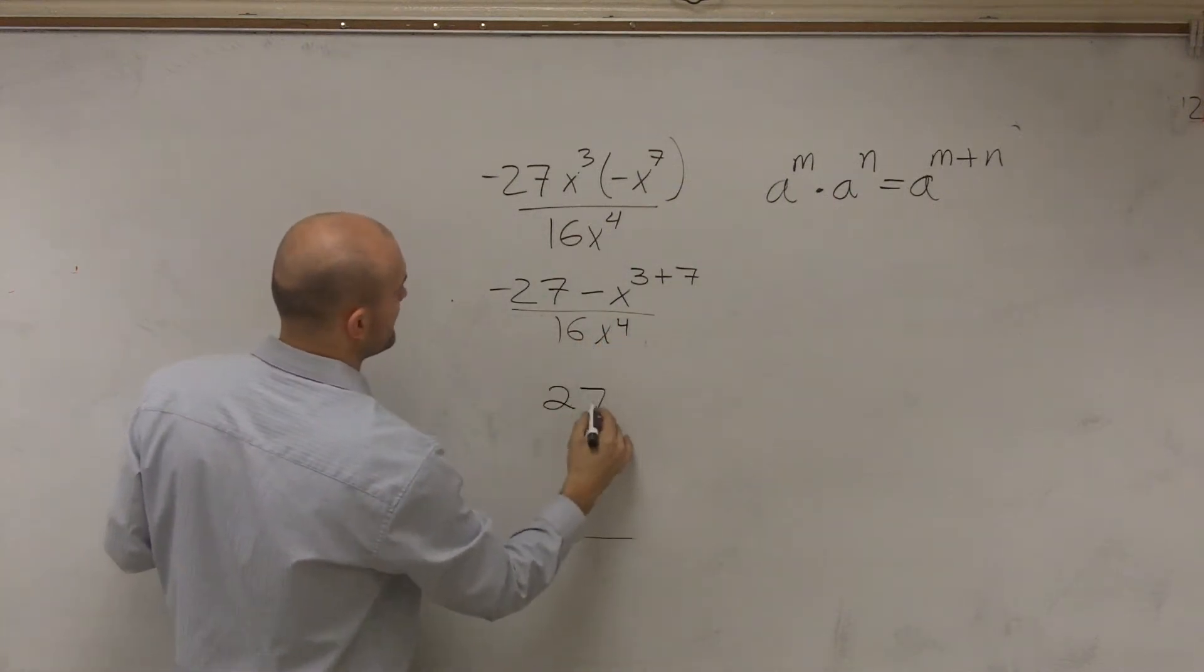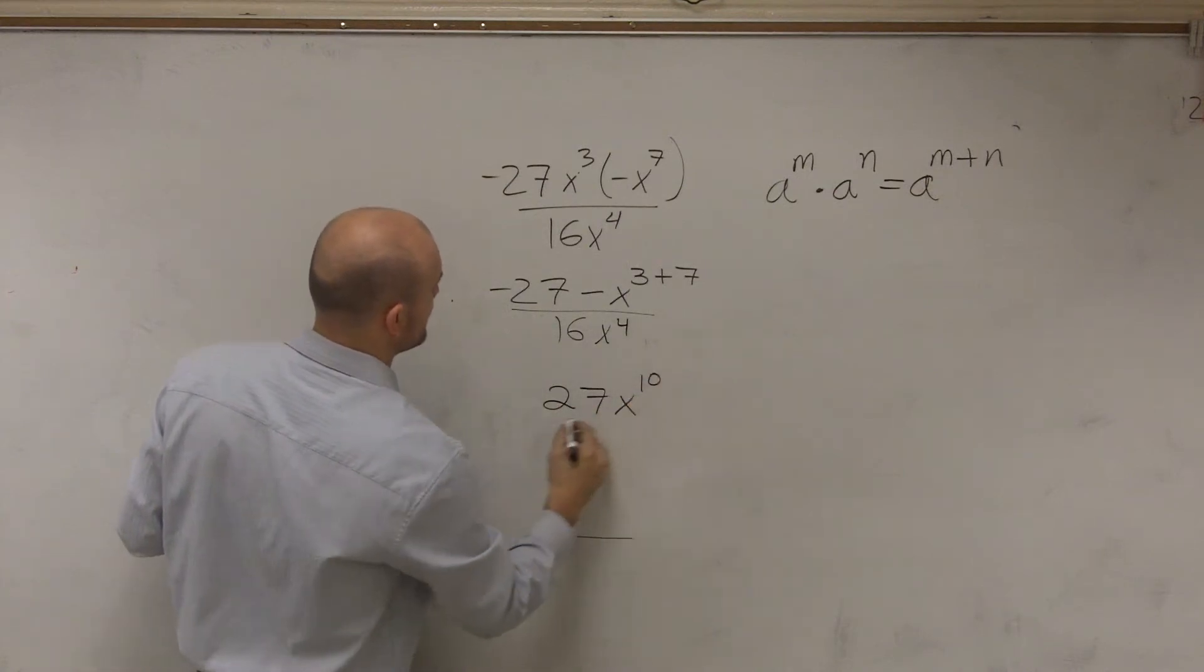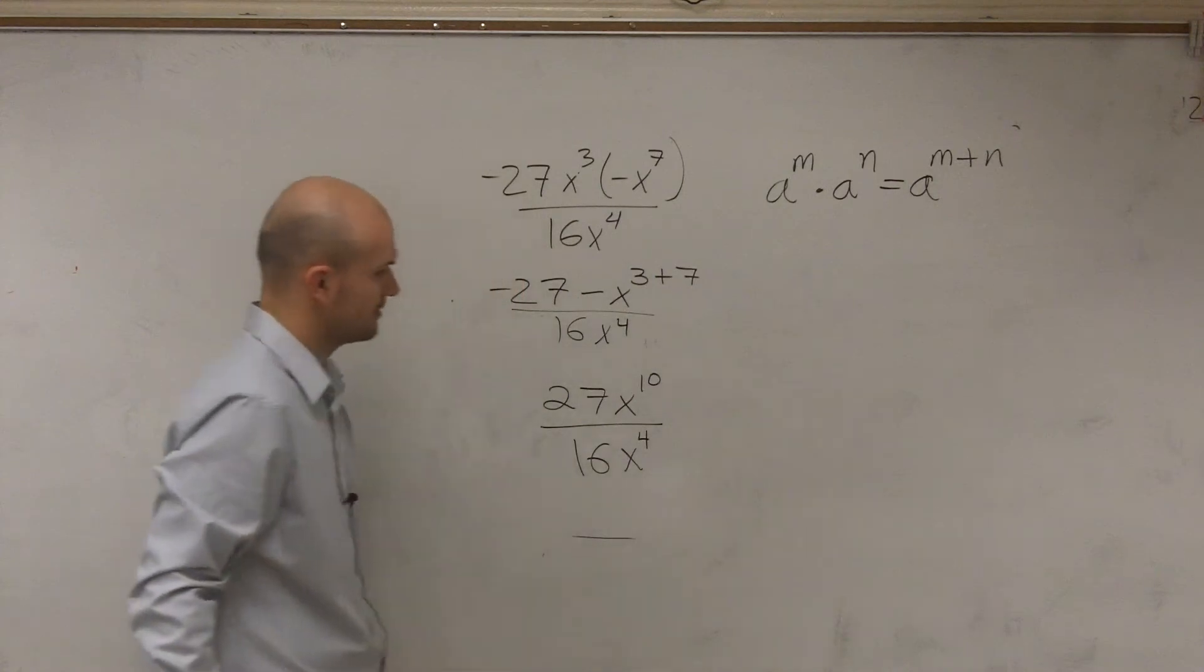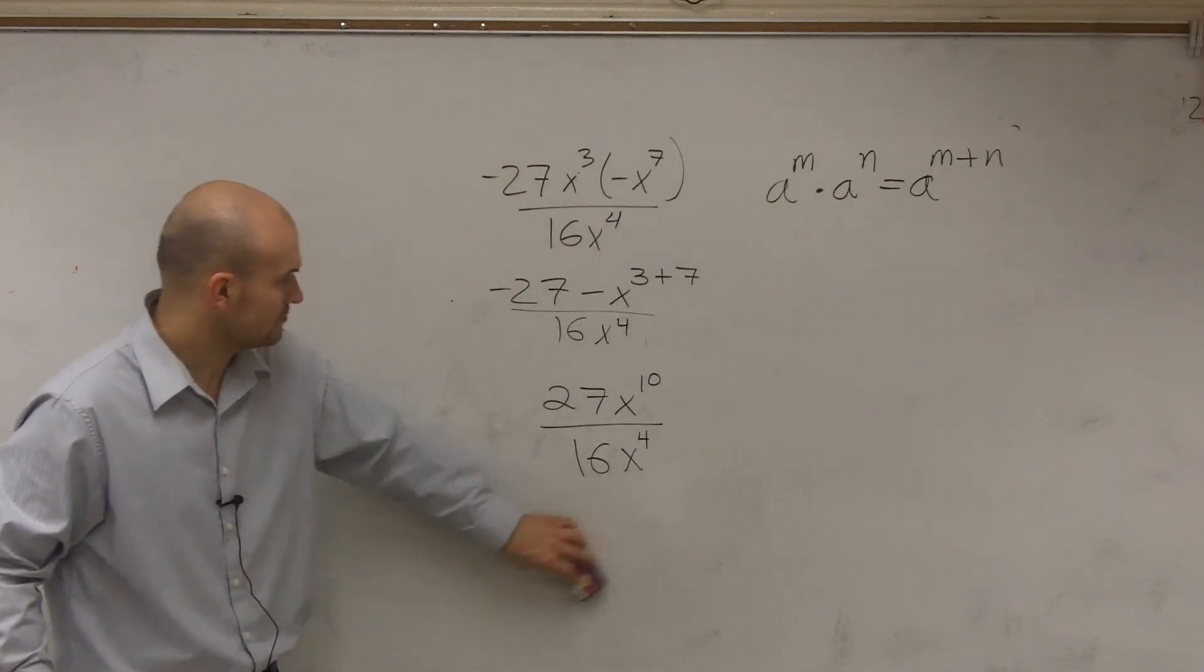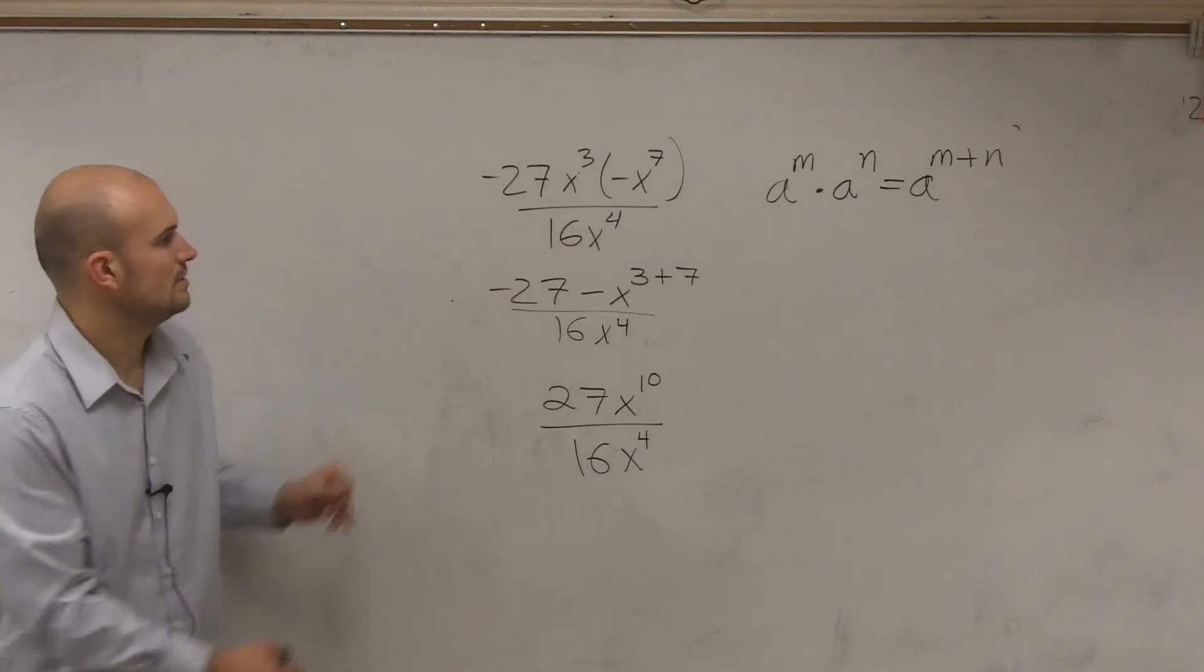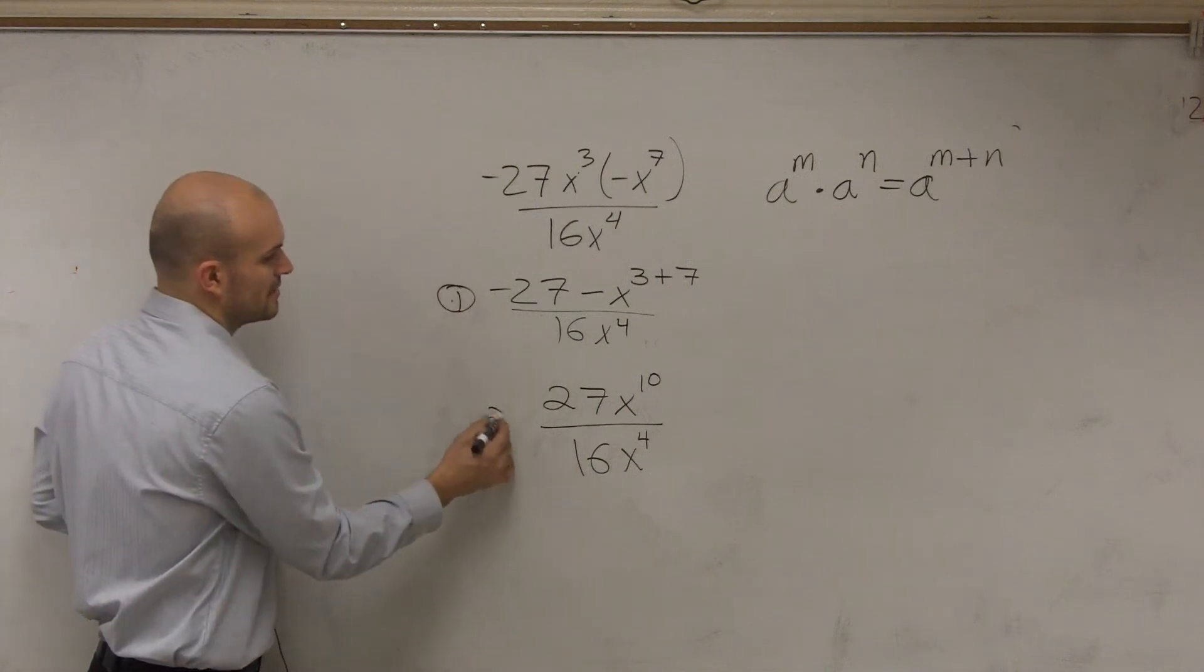So therefore, then it becomes 27x to the tenth divided by 16x to the fourth. All right, so that was step number one. That was step number two.